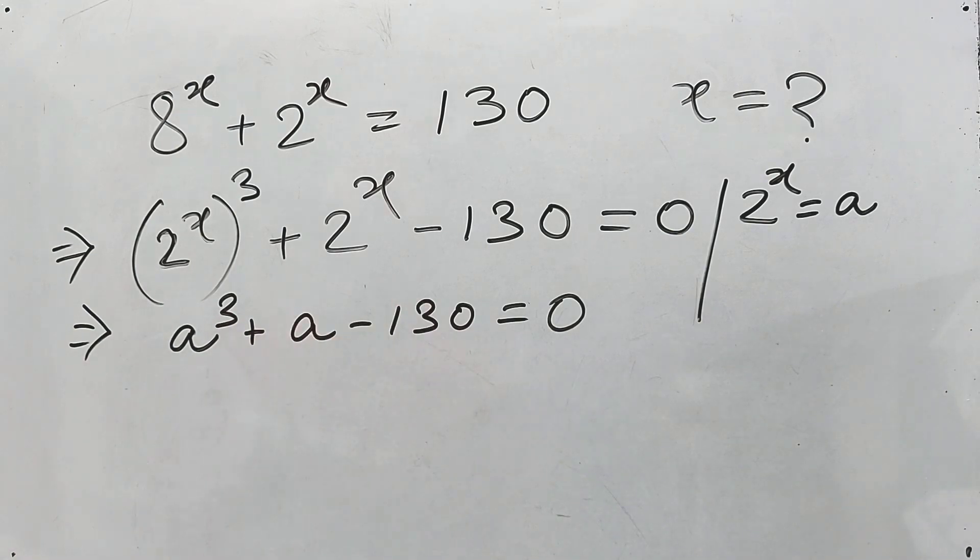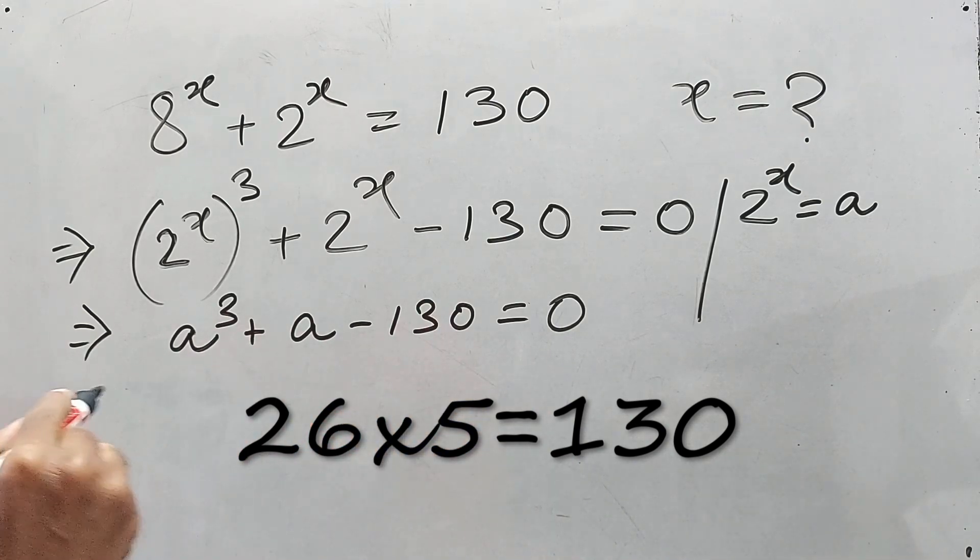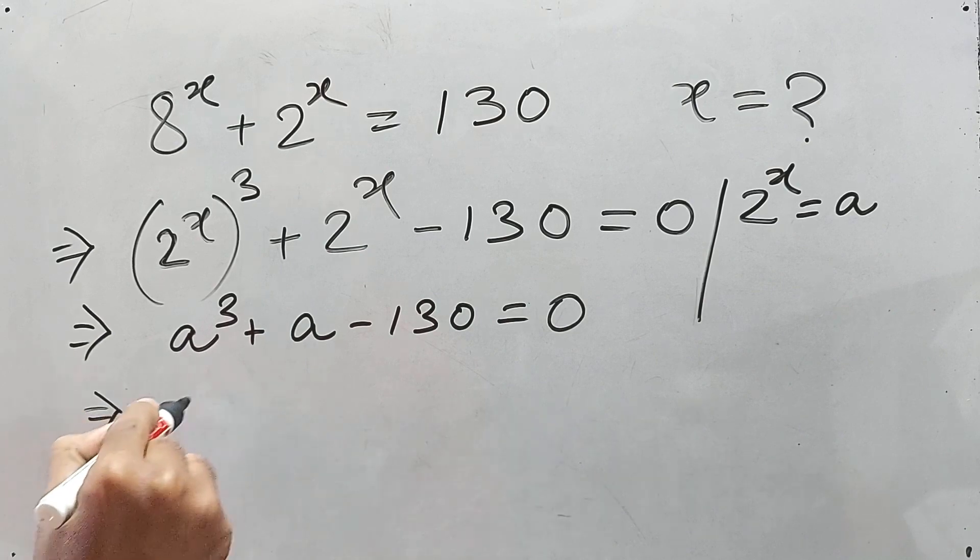Now what is this 130? It is not a milder factor also because there is a cube, so we'll have to try it in a different way. 26 into 5 is 130, right?